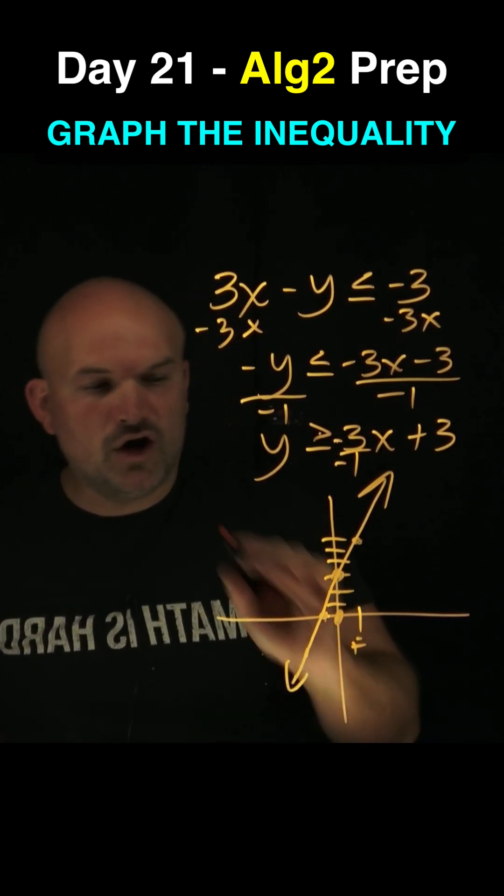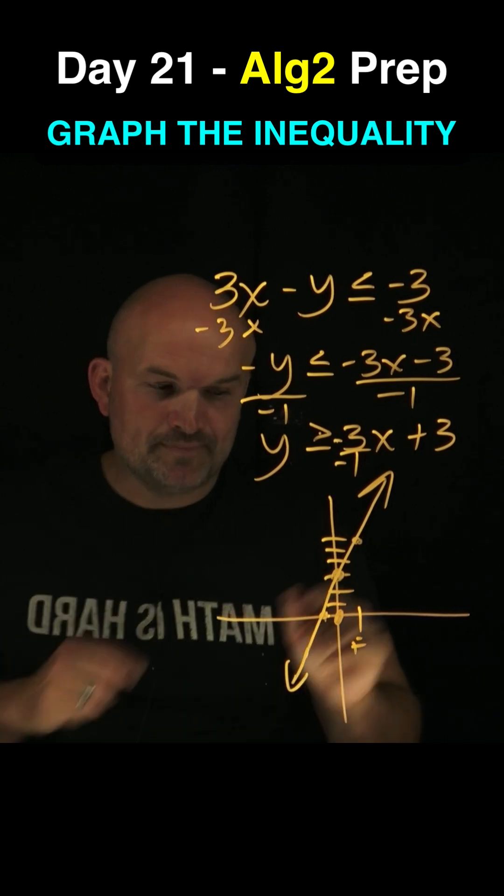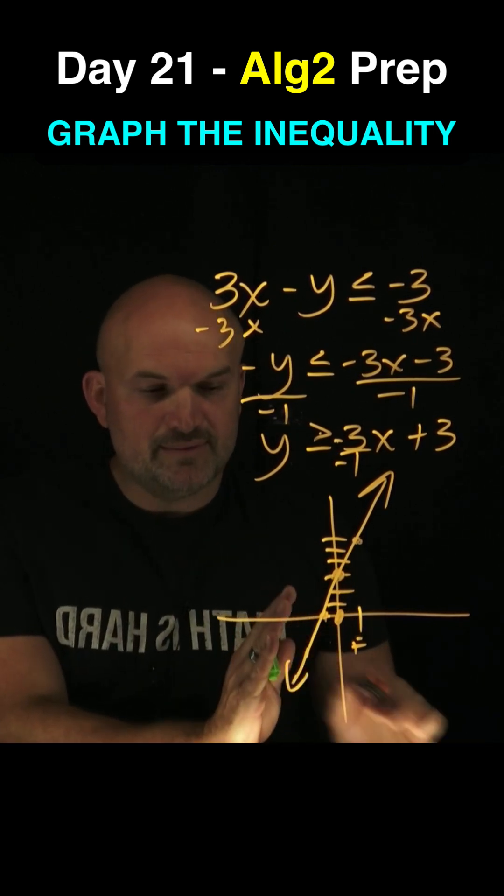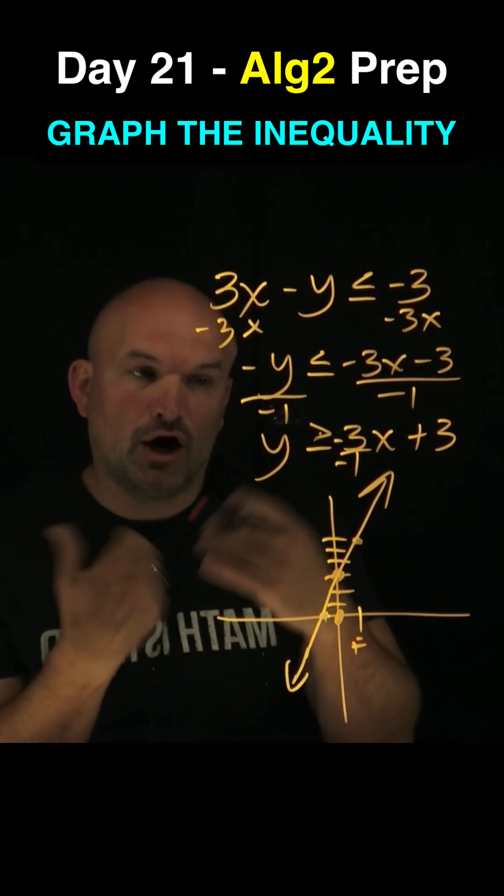If 0, 0 is false, then we know that all the values above the line are going to be true. If 0, 0 is true, then we know all the other values below this line are also going to be true.